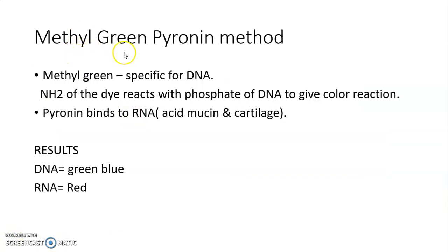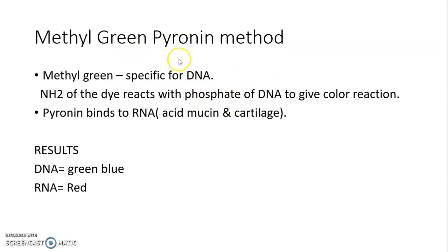The second important stain is methyl green pyronin stain. In this technique, two dyes are used: methyl green and pyronin. Methyl green is specific for DNA and pyronin is specific for RNA. The NH2 of the dye reacts with the phosphate of the DNA to give its color reaction — unlike Feulgen stain which binds to the sugar, here the dye binds to the phosphate of DNA. Pyronin binds to RNA and also binds to mucin and cartilage.